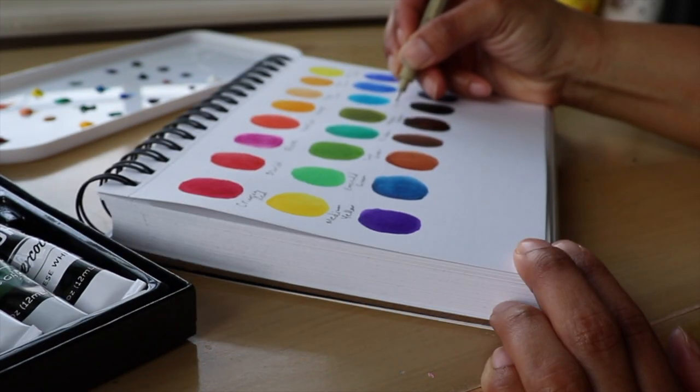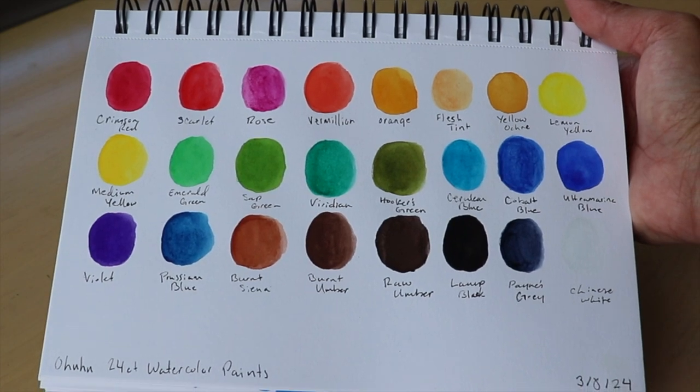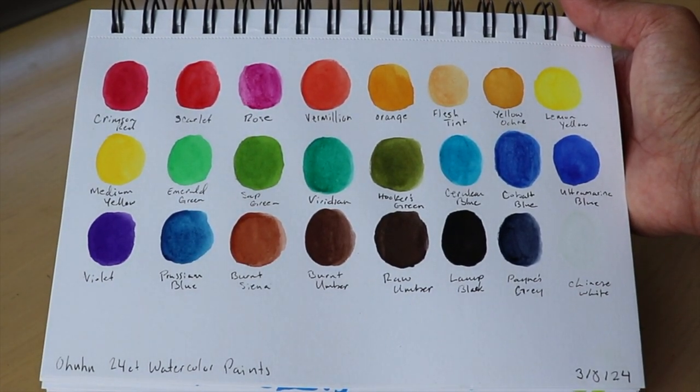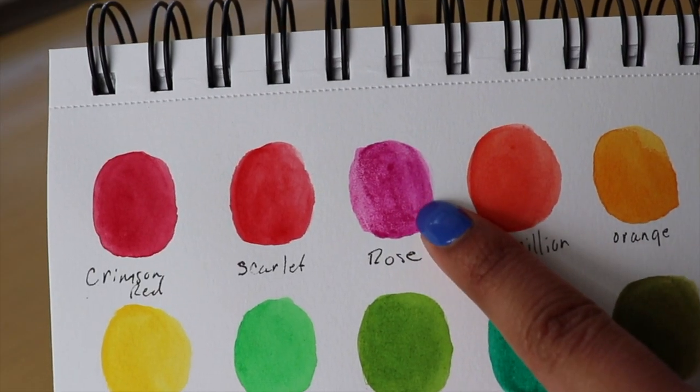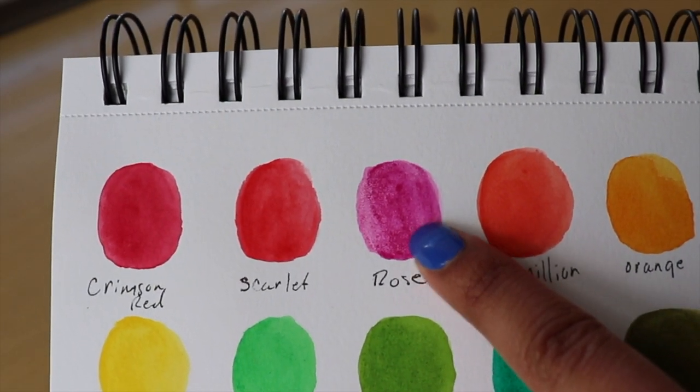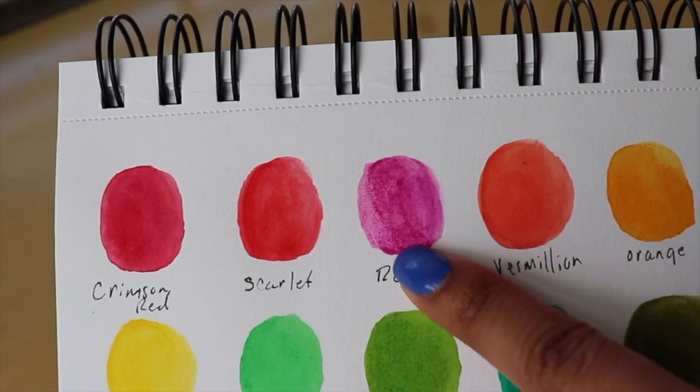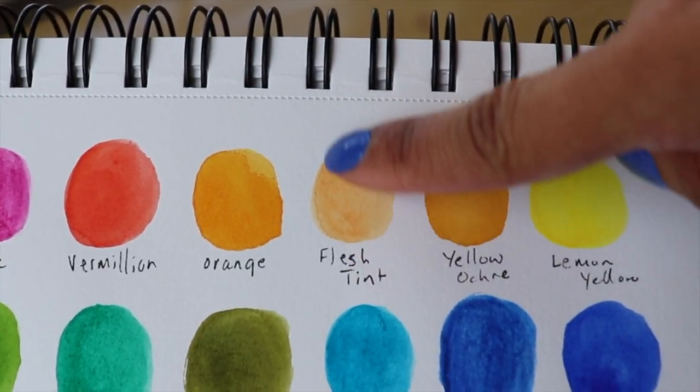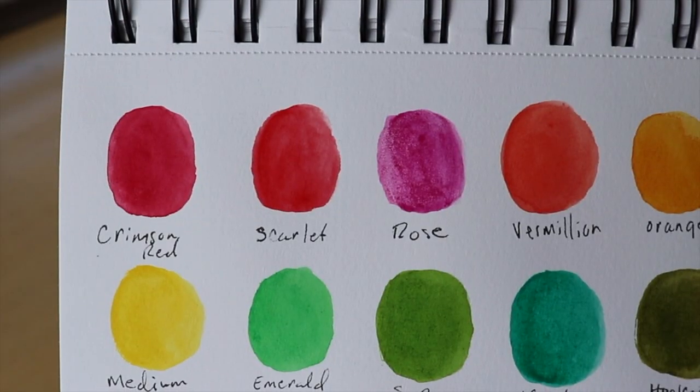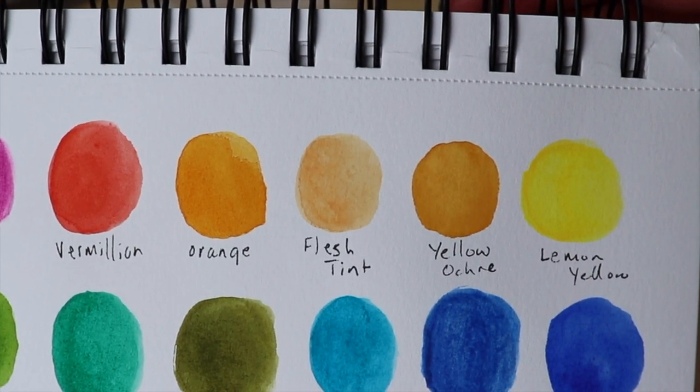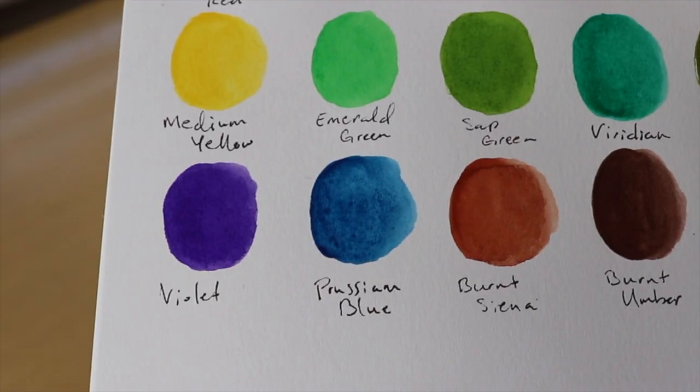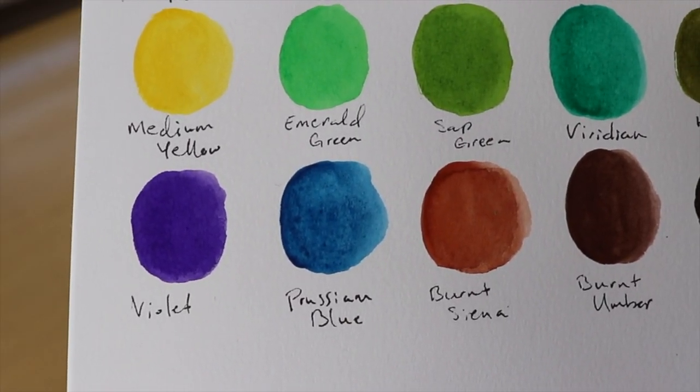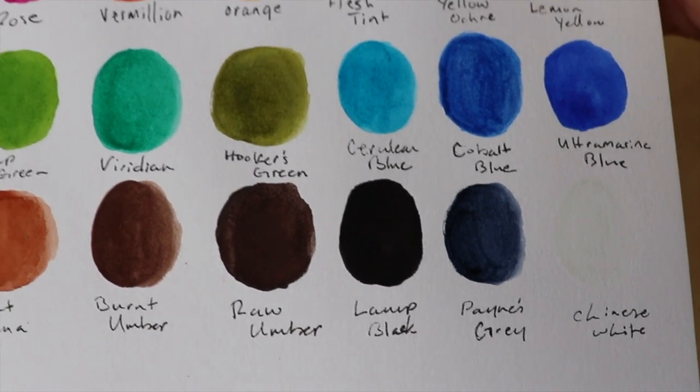After labeling all of my swatches, I'm ready to show them off to you. I am so happy with how they turned out. There were a couple colors that weren't quite as smooth and creamy, and that is Rose. As I even rubbed my finger across it, it's a different consistency compared to the other colors. Flesh Tint was also kind of the same way, almost like a drier paint. But besides those two colors, all the others looked really nice. They lay down beautifully with a nice little wash of color.